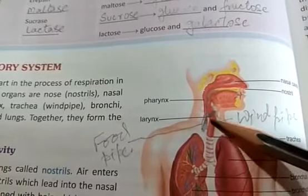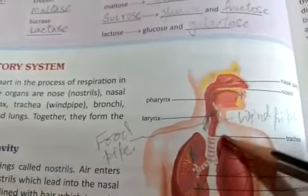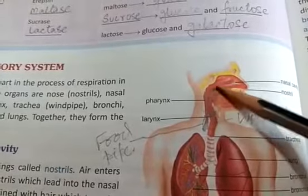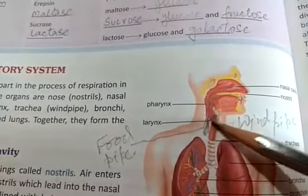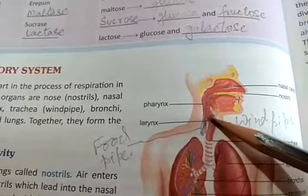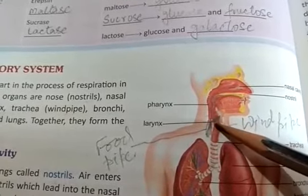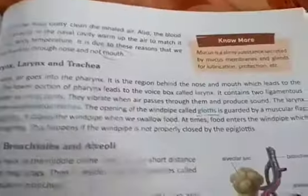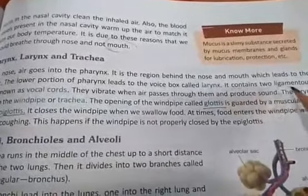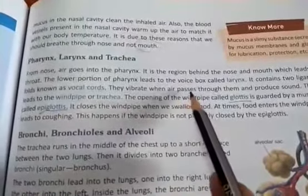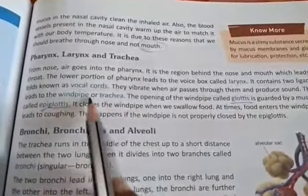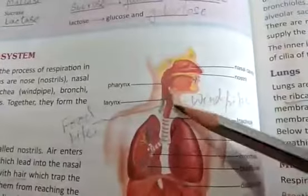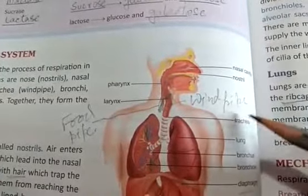The passage of air is from inside our body to the outside. Some muscular structures present here are called vocal cords. Whenever air passes through the vocal cords, they vibrate, and because of their vibration we can speak. So the larynx contains two ligamentous folds known as vocal cords — they vibrate when air passes through them and produce sound. The larynx leads to the windpipe or trachea.